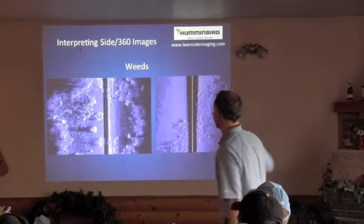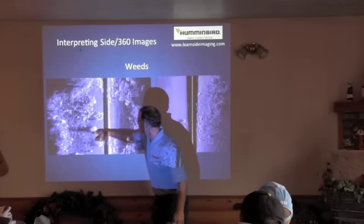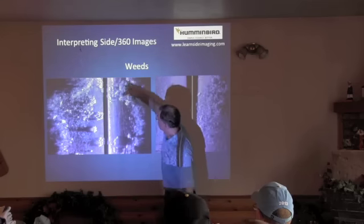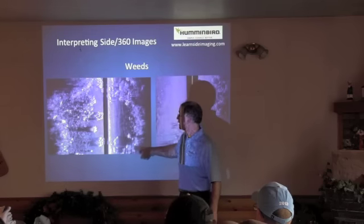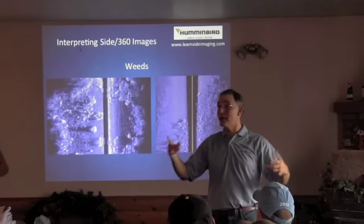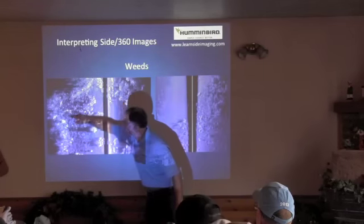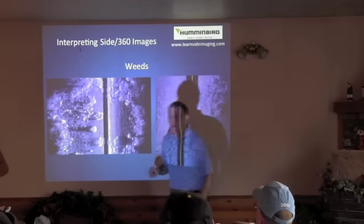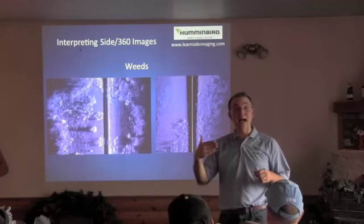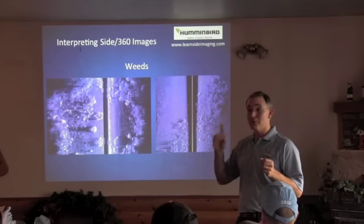Many people right now are fishing the weeds. This is a couple of images of weed beds. I always think about weeds looking like little patches of cauliflower or broccoli — they have that kind of uneven, mottled appearance. Distinct weed clumps will show up just like this, like a little bunch of cauliflower. Here is a distinct weed edge that goes all around this shallow bay. Using side imaging, you can take that entire narrow shallow bay and figure out the entire anatomy of the bay just by driving down the middle.